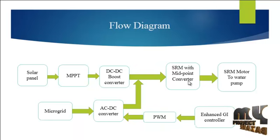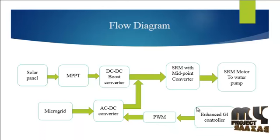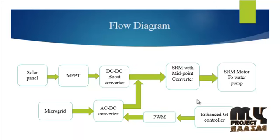We are using an 8-pole switched reluctance motor. For our control system, we mainly implement the Enhanced GI (Generalised Integrator) controller. This controller provides a reference signal to the PWM, where switching pulses automatically control the AC-to-DC converter. This specific section controls the entire system, reduces harmonics levels, and controls the water pumping system via the switched reluctance motor.